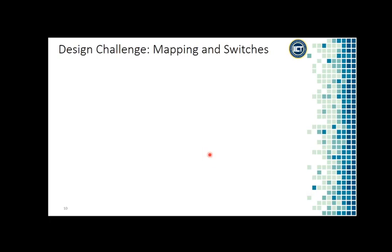Let's see a design challenge of mapping and switches. The affordance is that I know these switches have to be moved upwards or downwards — that's how we were brought up, we know how to use these buttons. But the mapping is what they actually do in the real world: which room's light has been switched off. There is no indication of that, so it is not a good kind of mapping.